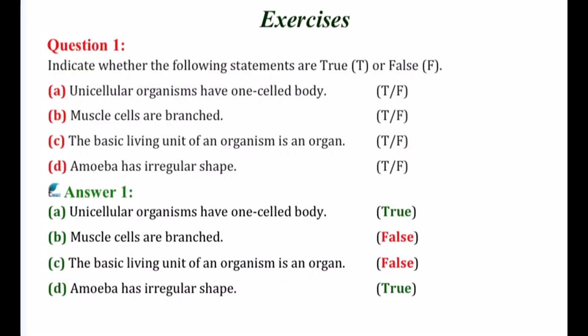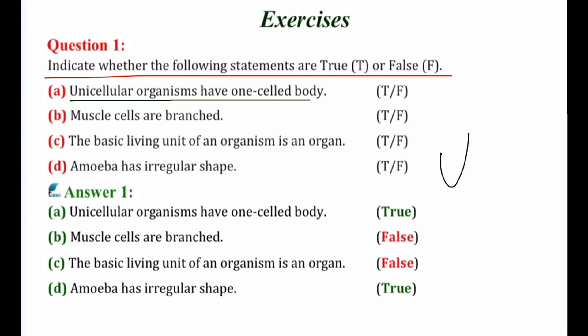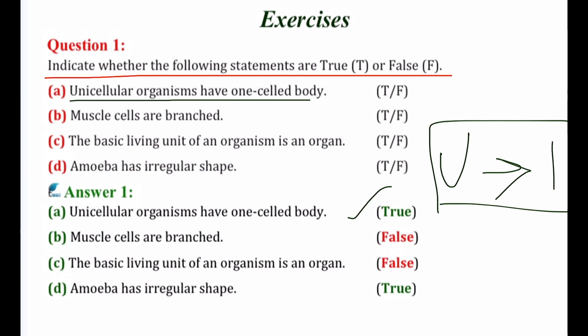Question number 1: indicate whether the following statements are true or false. Statement A: unicellular organisms have one-celled body. The given statement is correct because 'uni' means one, that is single. Unicellular organisms are made up of only one cell that carries out all the functions needed by the organism.